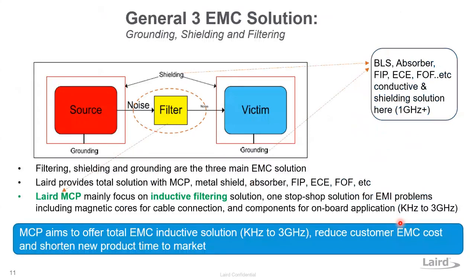In general, there are three solutions for EMC: grounding, shielding, and filtering. Unlike other Laird performance materials such as EMI absorbers — conductive materials used for grounding and shielding — MCP mainly focuses on filtering solutions. MCP components, whether cable cores, chip beads, inductors, or common mode chokes, are connected to the circuitry to block the noise on the PCBA or on the cable harness.